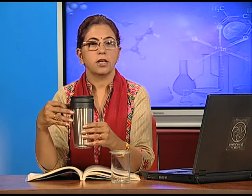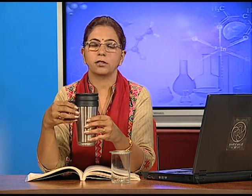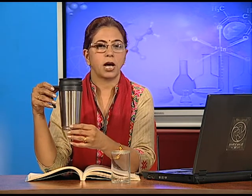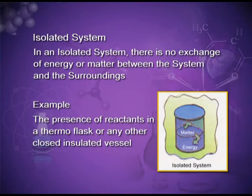A thermos flask is an example of an isolated system. The walls are insulated and the cap is also insulated — neither heat from inside the flask can go out, nor can heat from the surroundings enter. It is also closed from the top, so matter cannot be exchanged either. In an isolated system, there is no exchange of energy or matter between the system and the surroundings.